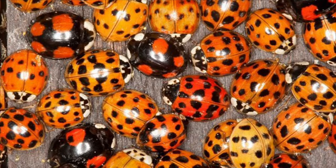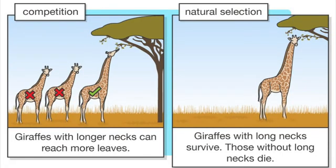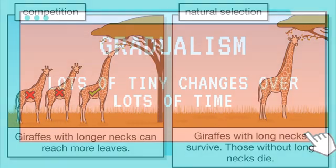Third, and possibly most importantly, you need competition. This means there are not enough resources to go around and individuals must compete. Therefore in the game of life there are some winners and some losers, meaning some traits are favorable and other traits are less favorable.